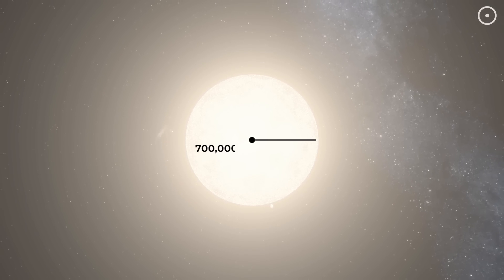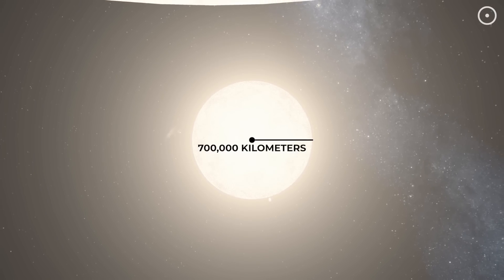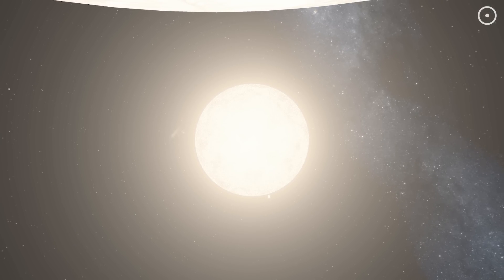Our Sun has a radius of about 700,000 kilometers. It's huge by our standards, right?